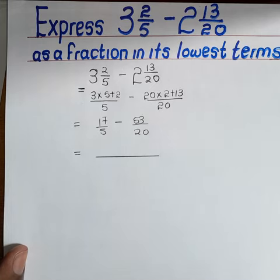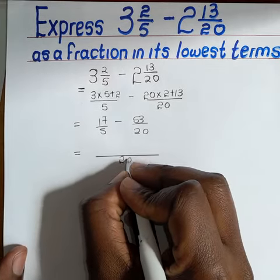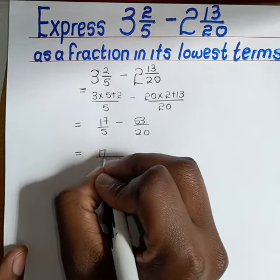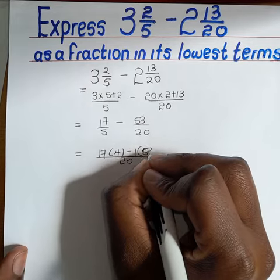We look for the lowest common multiple of 5 and 20, which is 20. We say 5 into 20 is 4, so 4 times 17, minus 20 into 20 is 1, so 1 times 53.